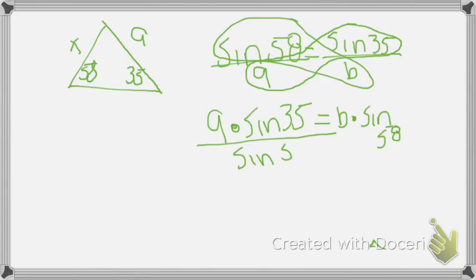And the next thing I did was sine 58 had to be divided on its own side so it would cancel out.